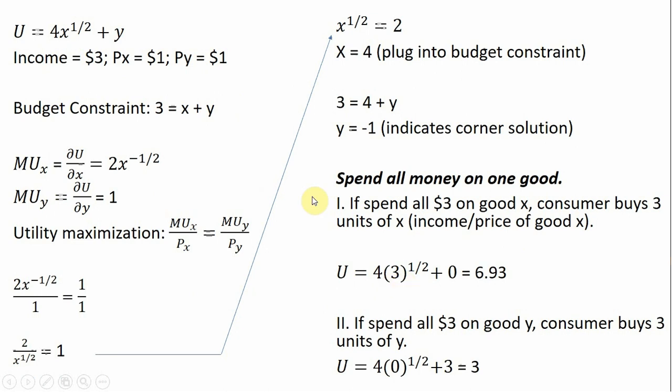So plugging 3 in for X, that's how many units we can afford if we spent all our money on good X. And Y is 0, we get utility of 6.93.